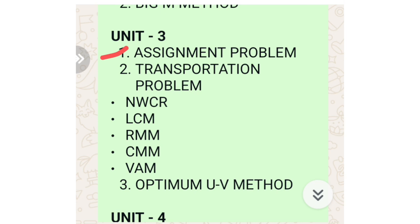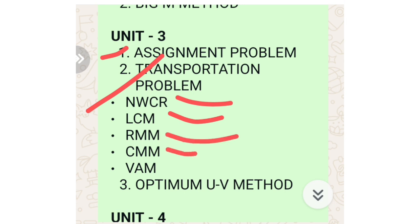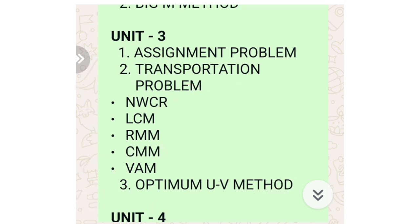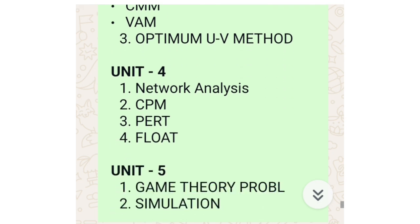In unit number three you are having three topics. First one is the assignment problem, also known as the Hungarian method. Second one is the transportation problem — you are having five types: Northwest Corner method, Least Cost method, Row Minimum method, Column Minimum method, and Vogel's Approximation method, also called VAM or penalty method. Sometimes they will also ask for the optimum solution, which you can attempt once you are perfect with the transportation problem.